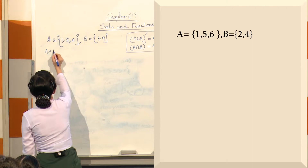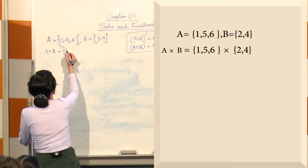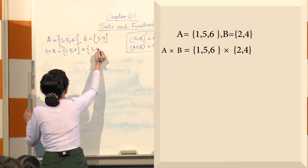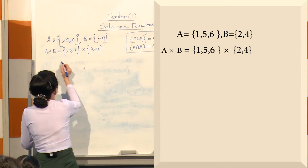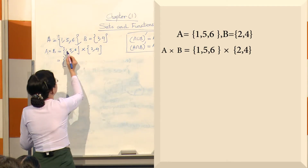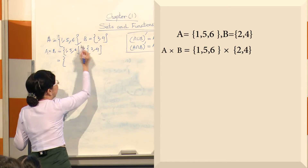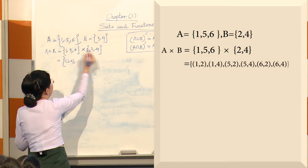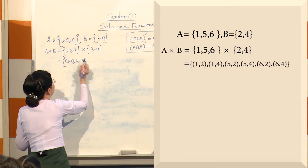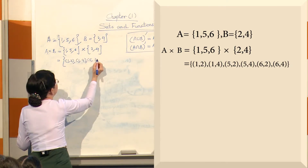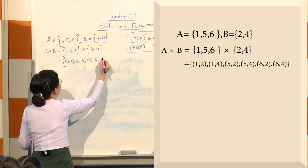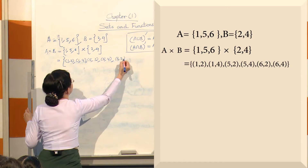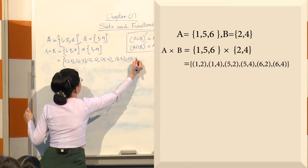In the process of the Cartesian product X, which is the set of {1, 5, 6} cross the set of {2, 4}. Let's see what the elements are — the first elements are (1,2), (1,4), (2,2), (2,4), (3,2), (3,4).